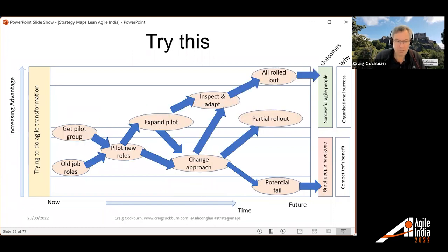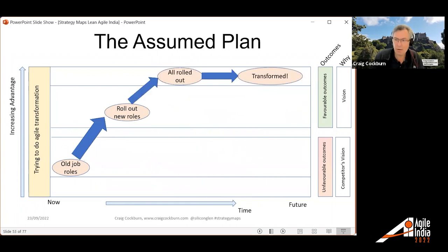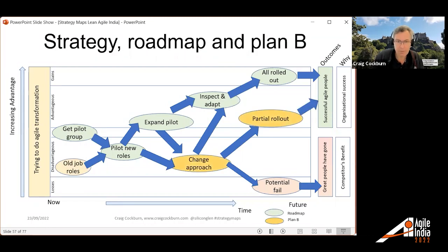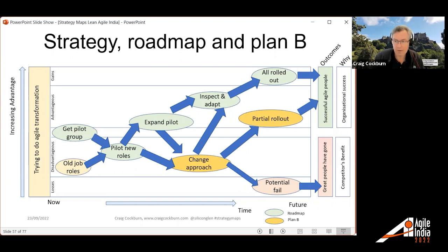A more realistic strategy map shows: let's pilot the roles, get a group pilot, see how that goes, then expand it — or if it doesn't work, change the approach. You can see divergent pathways, check the plan for excessive optimism — 'wait, that's too big a leap in one goal, experiments are valuable here.' This is more like the reality. I'm making failure obvious, but this is your additional roadmap — you're still making other options visible and having them ready just in case. There's your plan B. You might need to prepare plan B early. When you get a plan B depends on the riskiness of the situation. This is the strategy, the roadmap, and the plan B all in one place.